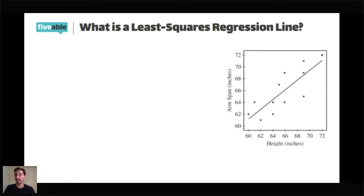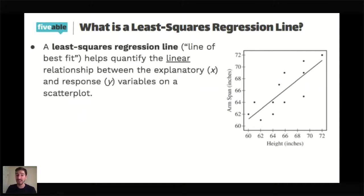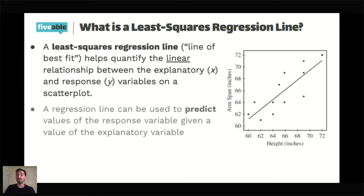You should see the same scatter plot on your screen right now, with a line drawn through it. The line kind of goes through many of the dots — not necessarily through all of them, but fits pretty well with the data. It is called a least squares regression line. In a previous algebra class, you might have called it a line of best fit. What it's doing is quantifying the linear relationship between these two variables. There's going to be an equation for this line that will help model the data we see for the height and arm span of these students. We're going to be able to use these regression lines to help make predictions for values of the response variable given another value of the explanatory variable.